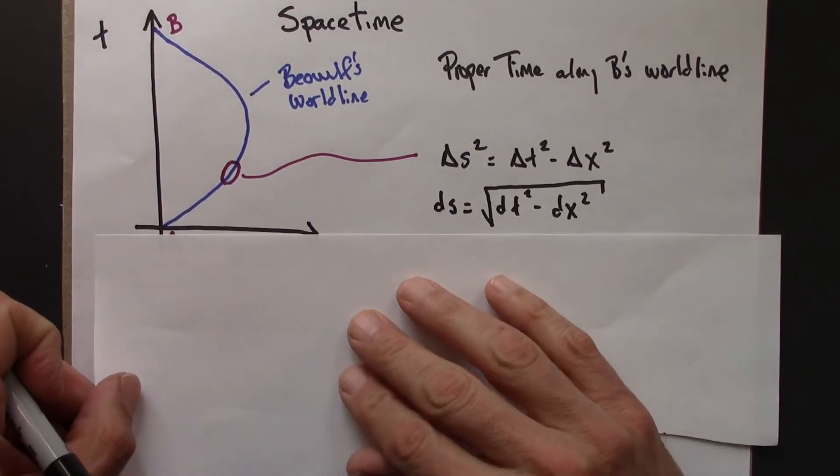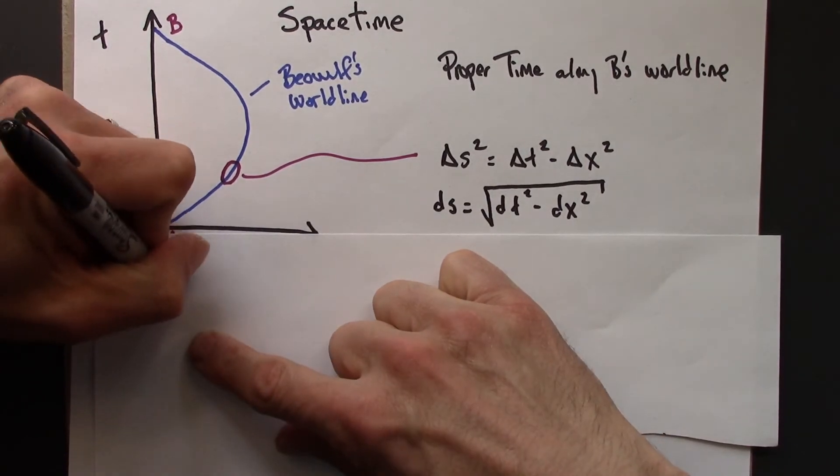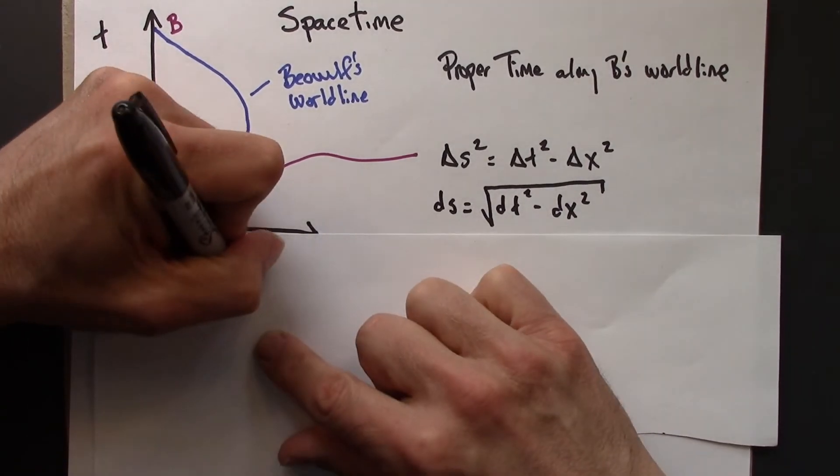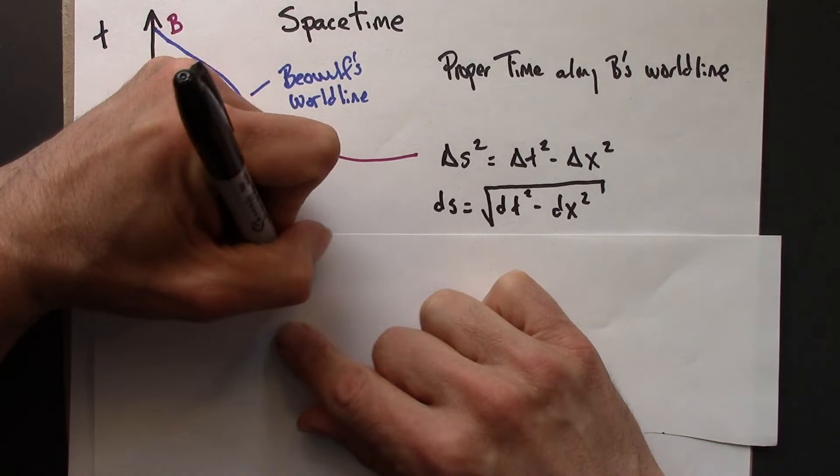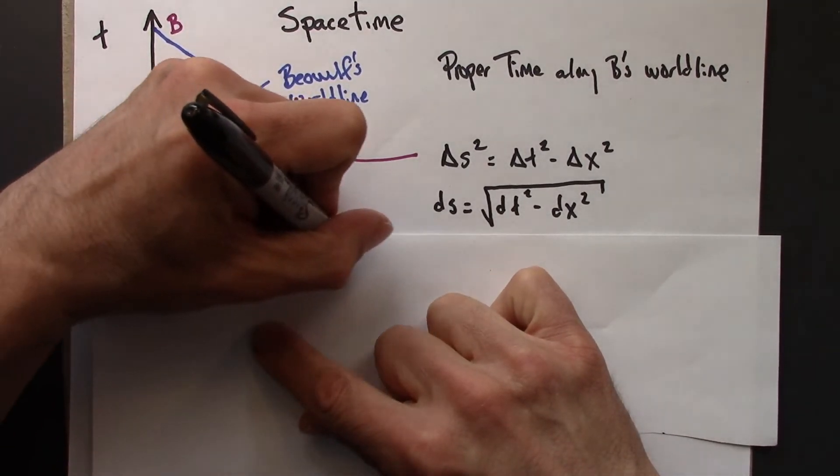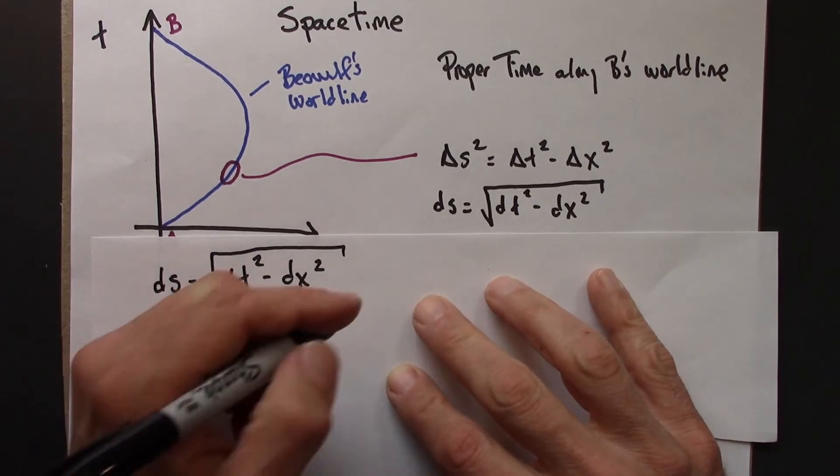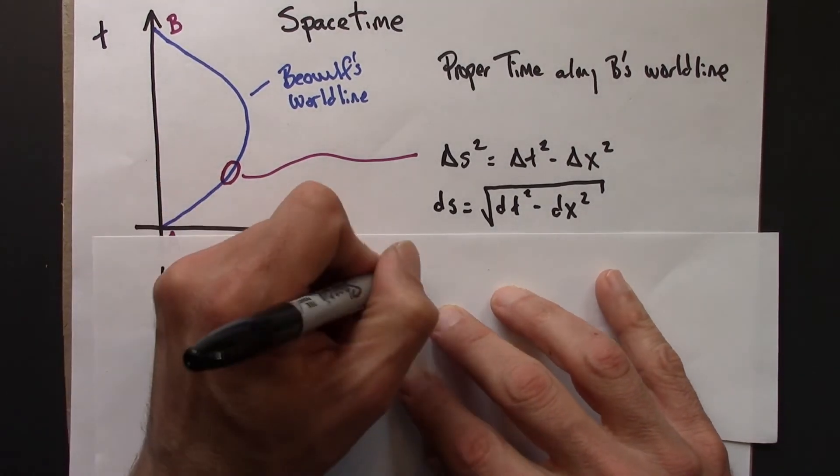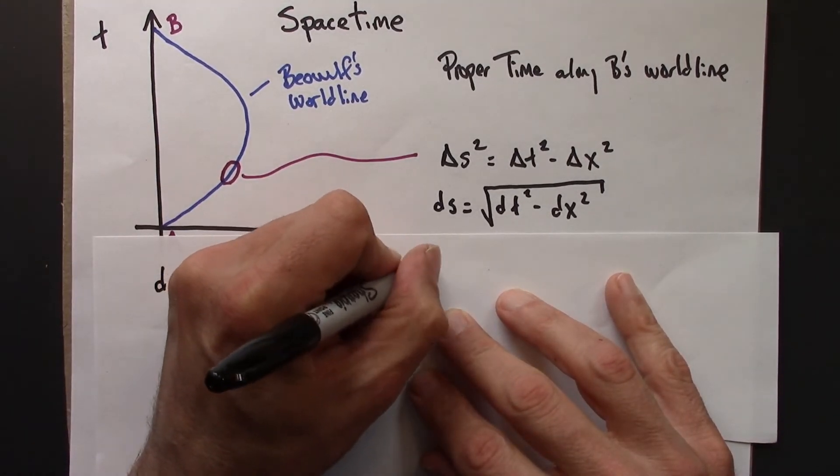I've got ds is dt squared minus dx squared. And I'm going to factor out a dt, or I guess a dt squared, I should say.